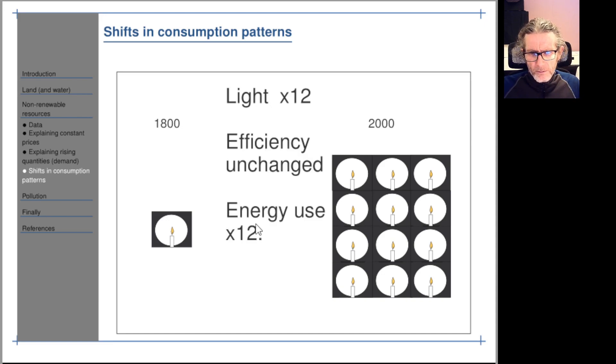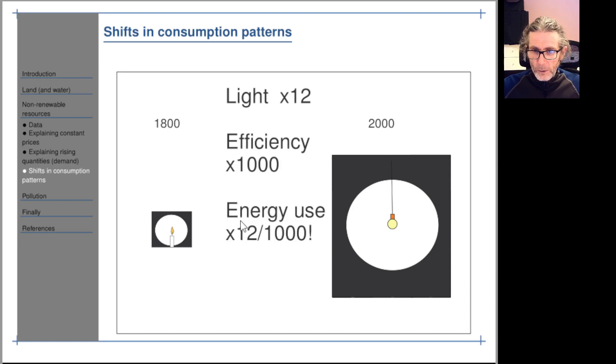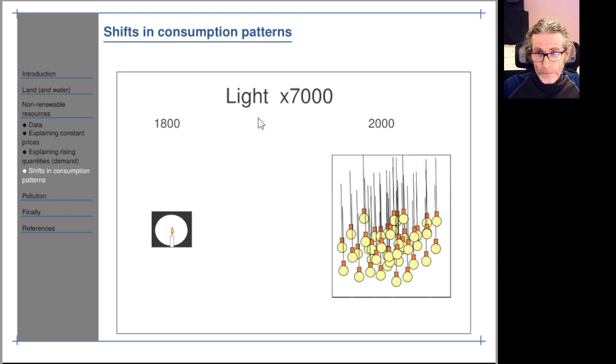If the efficiency of light production is unchanged - we're still using wax or maybe even tallow - then energy use would be times 12. That's no decoupling. But if we've got a big efficiency increase and light is times 12, then energy use would have gone down hugely. Actually, the energy efficiency of an LED bulb compared to tallow is about a thousand times. In that case, energy use in the lighting sector would have gone down by a factor of a hundred. That would be fantastic - then we could really talk about decoupling.